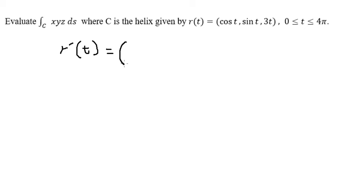First derivative of cos t, you get negative psi t. First derivative of psi t, you get cos t. First derivative of 3t, you get the number 3.